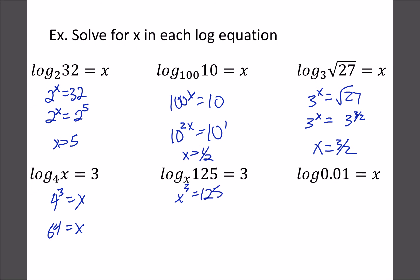x cubed equals 125. This one we can actually solve by taking the cube root. The cube root of 125 is 5. The last one we have 10 to the x equals 0.01, so 0.01 would be 10 to the negative 2. In this case we get x equals negative 2.